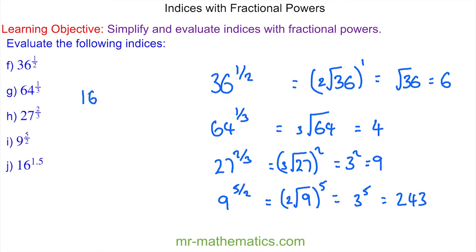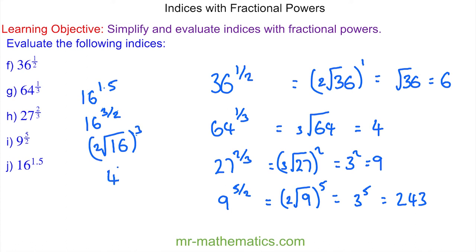Finally, for question j, we have 16 to the power of 1.5. We can write 1.5 as a fraction, which gives 16 to the power of three over two. So it's the square root of 16 cubed. The square root of 16 is four, and four cubed is 64. Thank you for watching and I hope you found that useful. Thanks again and take care.